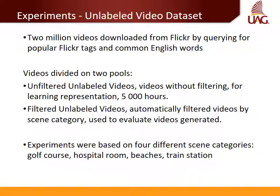Four different experiments were done. The first is the unlabeled dataset experiment. Two million videos were downloaded from Flickr and divided into two sets: unfiltered labeled videos and filtered unlabeled videos. Golf courses, hospital rooms, train stations, and beaches were the four kinds of scenes used to experiment.